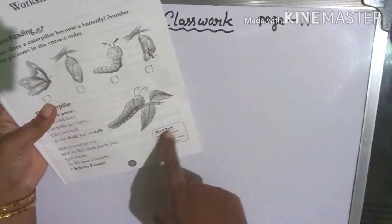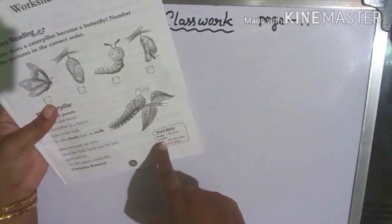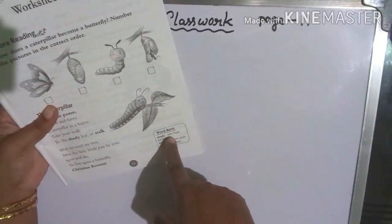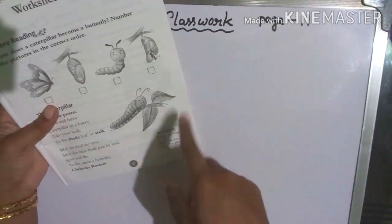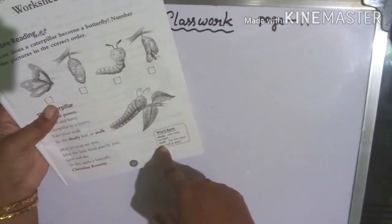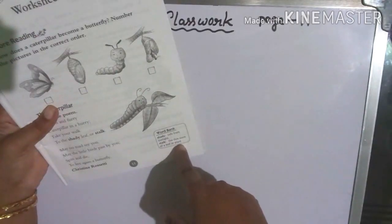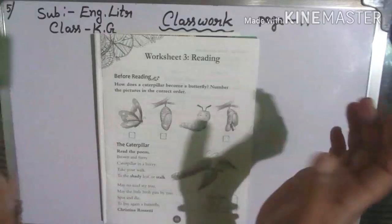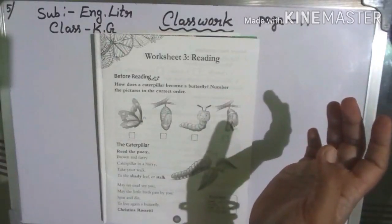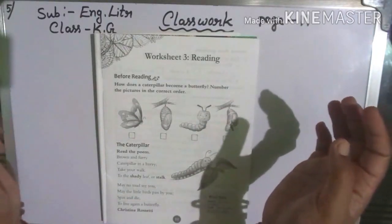So children, practice word 'shady' and 'stalk' - safe from sunlight. Shady means safe from sunlight, stalk means the thin stem of a leaf or plant. So children, practice page 11 nicely.